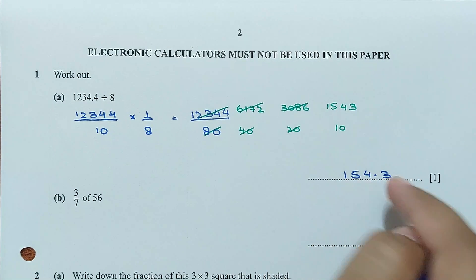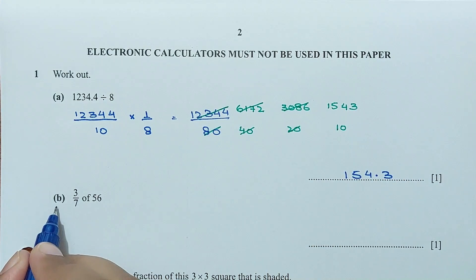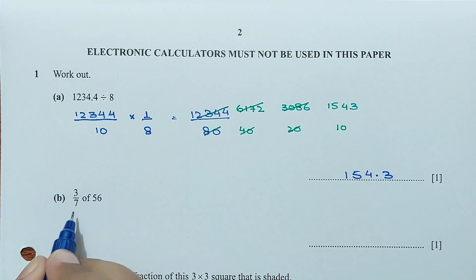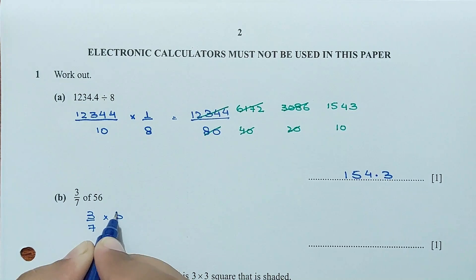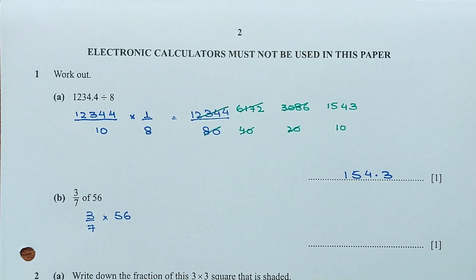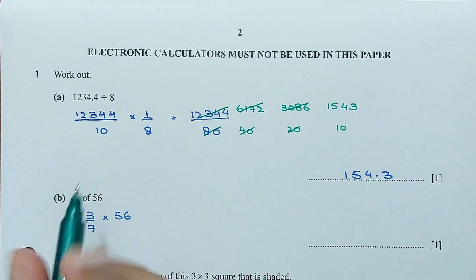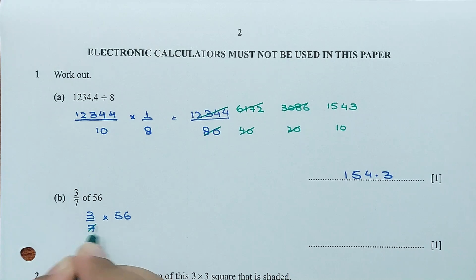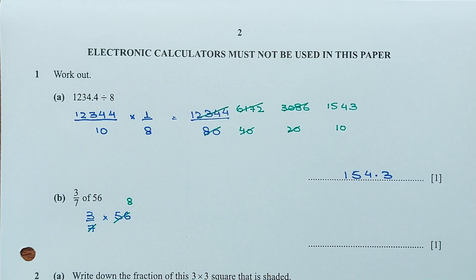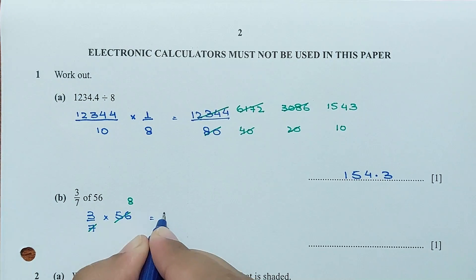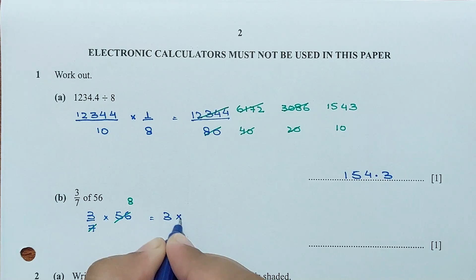For part B: 3/7 of 56. So that's 3/7 times 56. We know 7 times 8 is 56, so 3 times 8 is 24. The answer is 24.